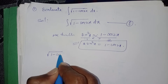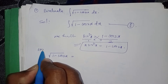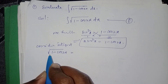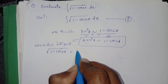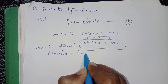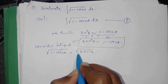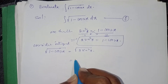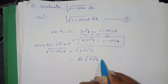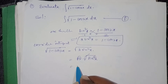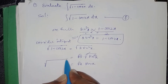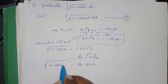Consider the integrand √(1 - cos2x). We know that 1 - cos2x = 2sin²x. Substituting here: √(2sin²x) = √2 · √(sin²x) = √2 · sinx. This is the simplified value of √(1 - cos2x).